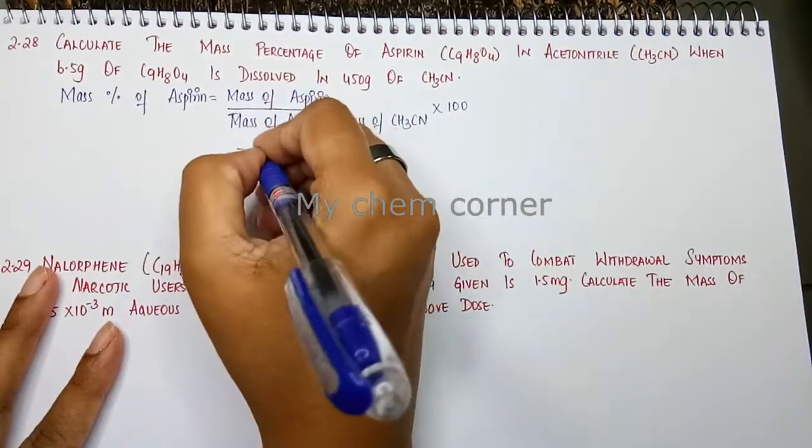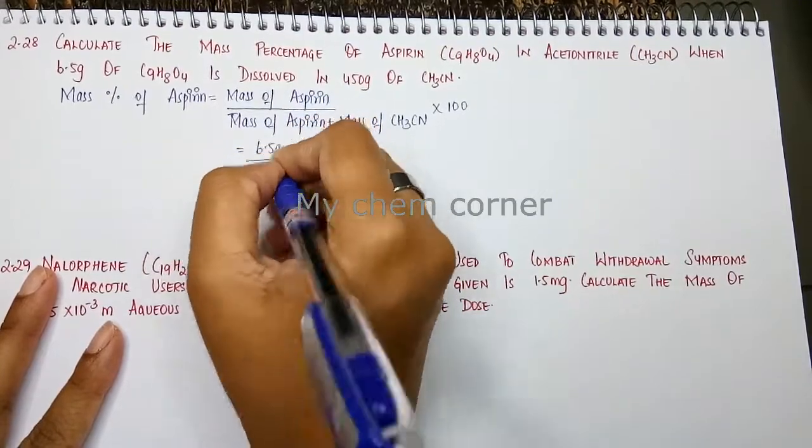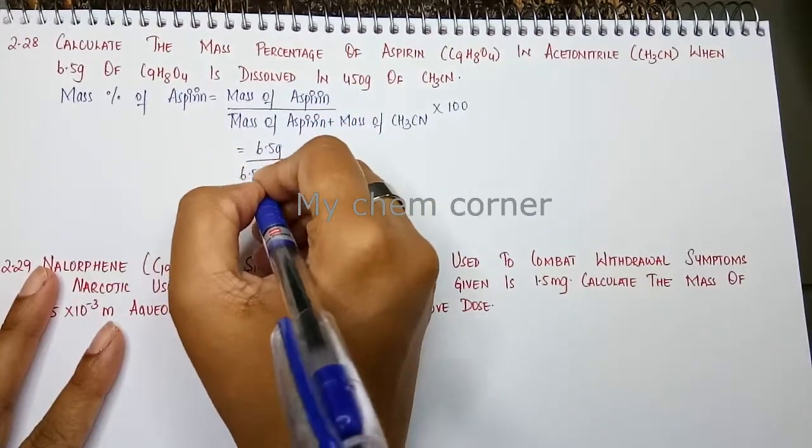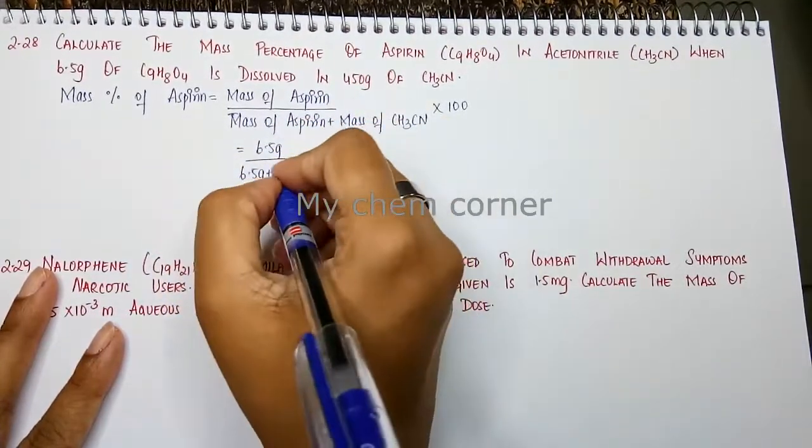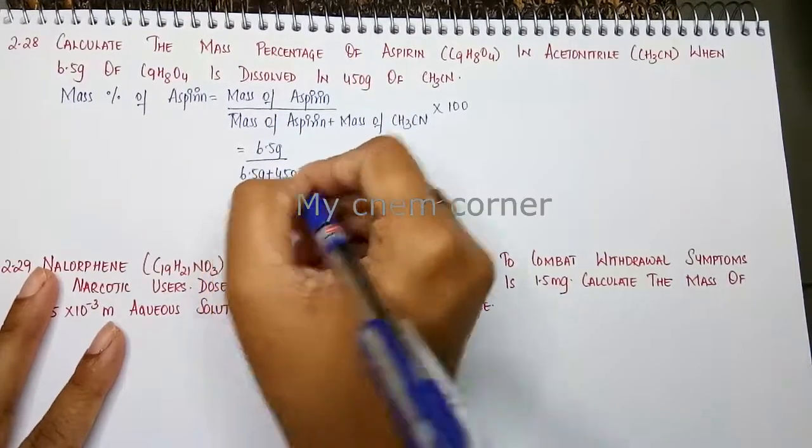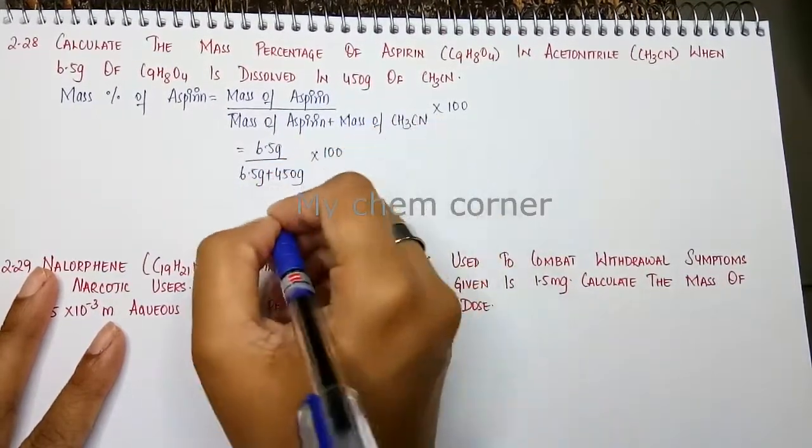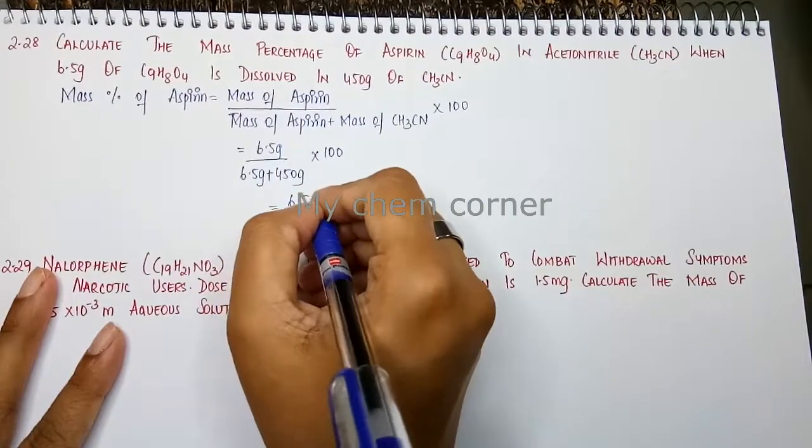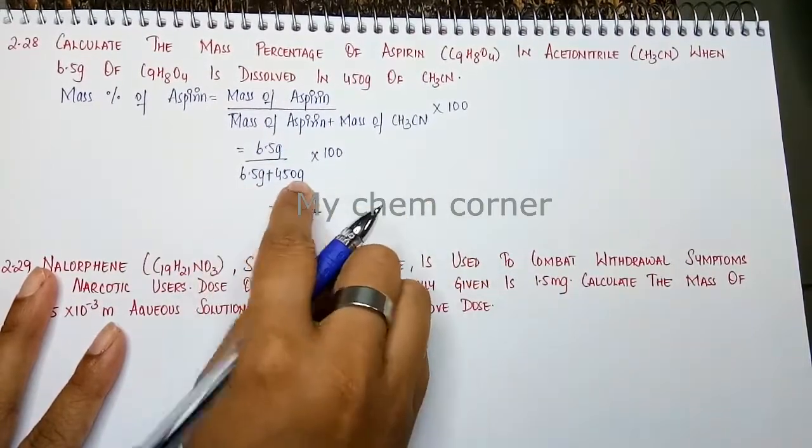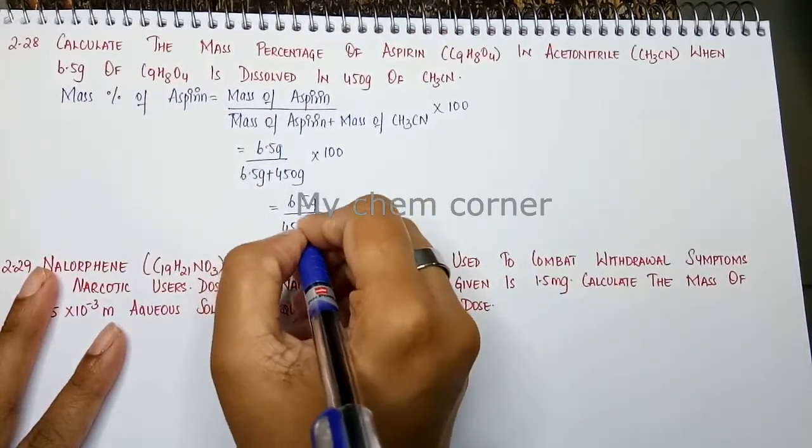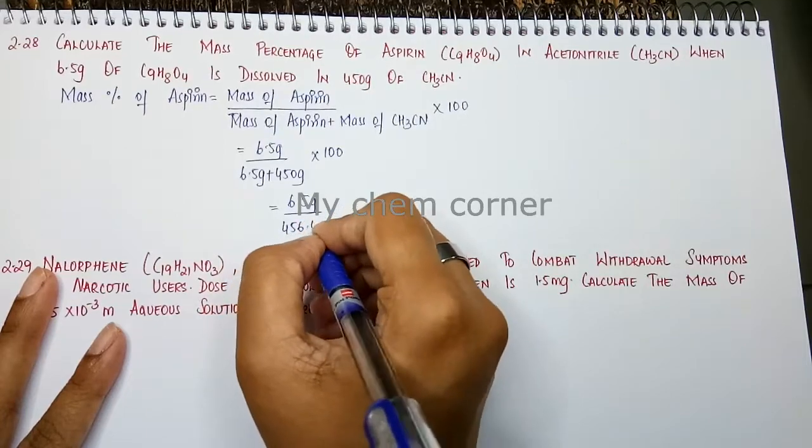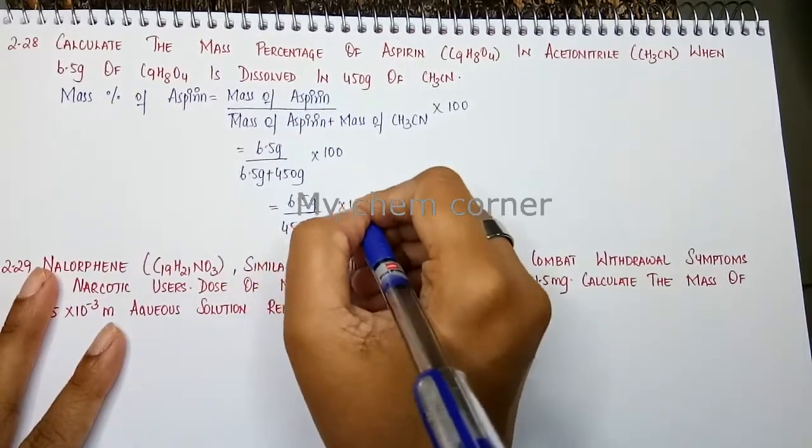So mass of aspirin is 6.5 grams. Then below, mass of aspirin 6.5 plus mass of acetonitrile is 450 grams into 100. This is equal to 6.5 grams divided by 6.5 plus 450 is 456.5 grams into 100.